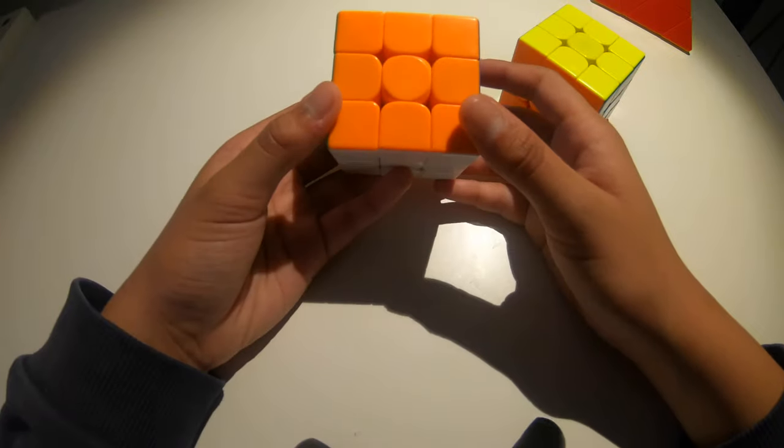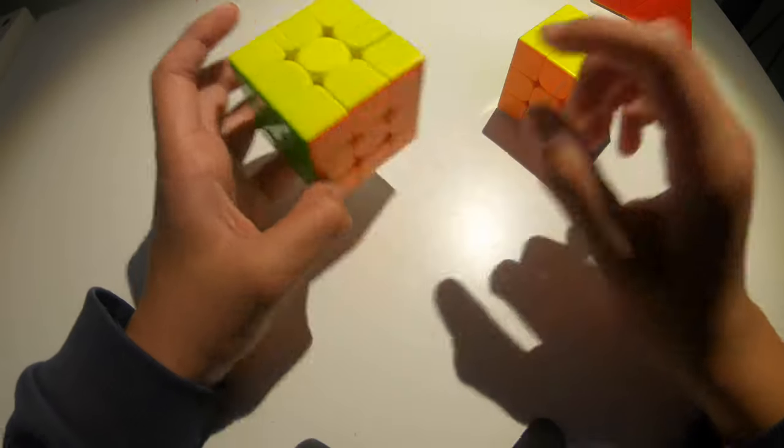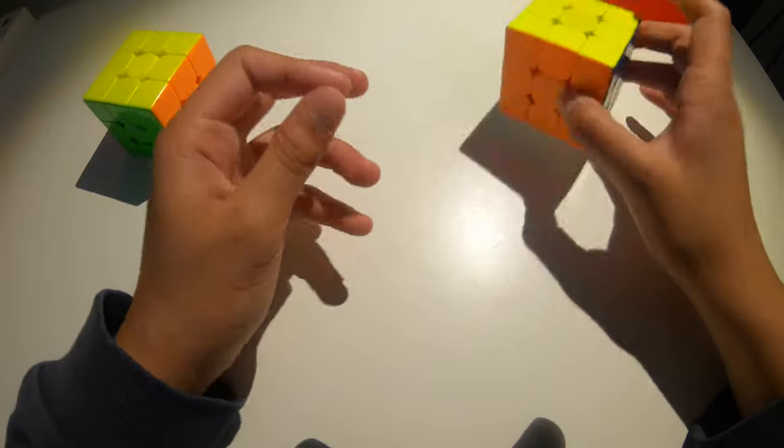Okay. So, we have, this is the Yulong pieces with the Meilong core. This is the Meilong pieces with the Yulong core. So, let's try this one first.